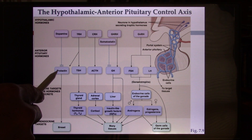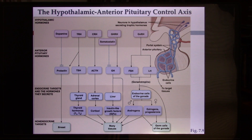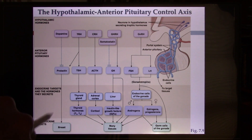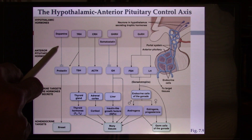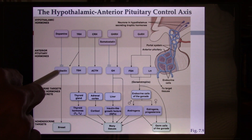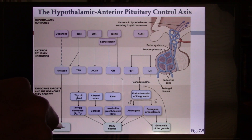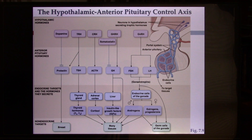Prolactin is not a traffic hormone because it has direct function. Its function is to cause breast cells to develop — not milk let-down, but breast development, before you have a baby. Dopamine will actually inhibit prolactin release. More dopamine inhibits prolactin release, and therefore decreases breast development.